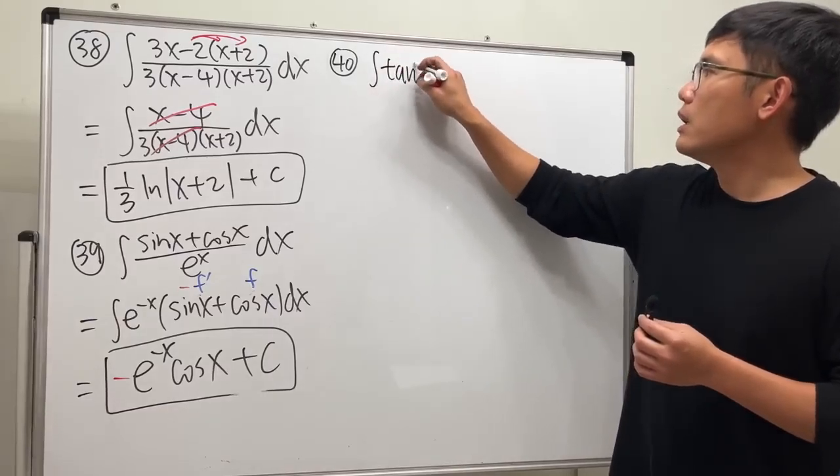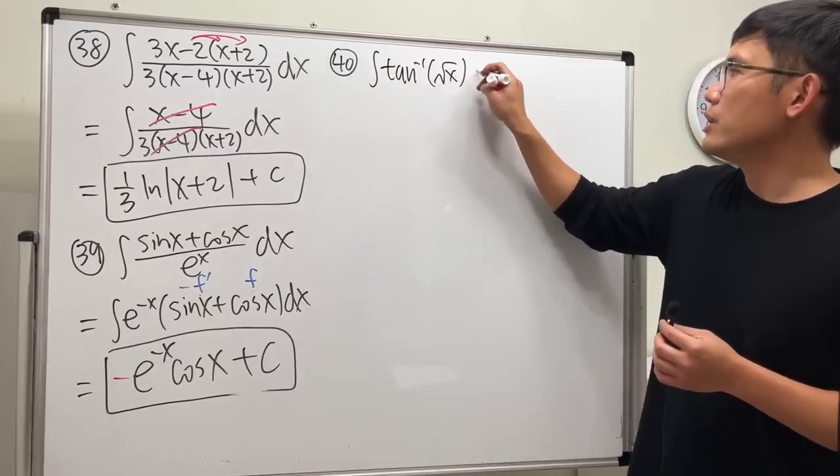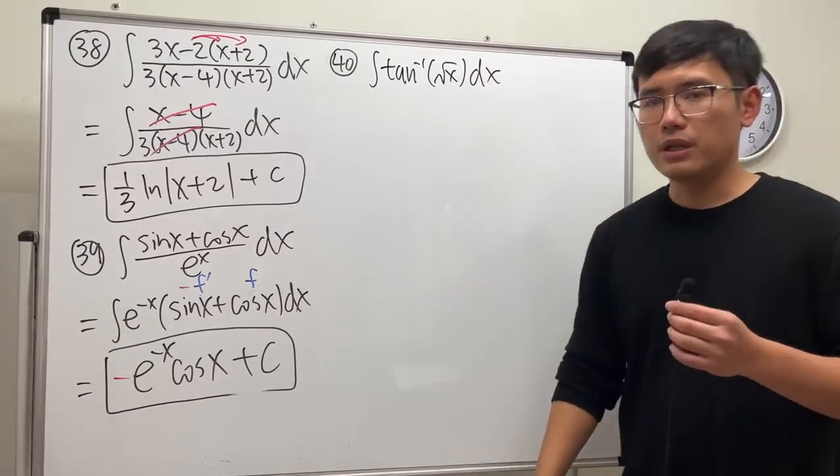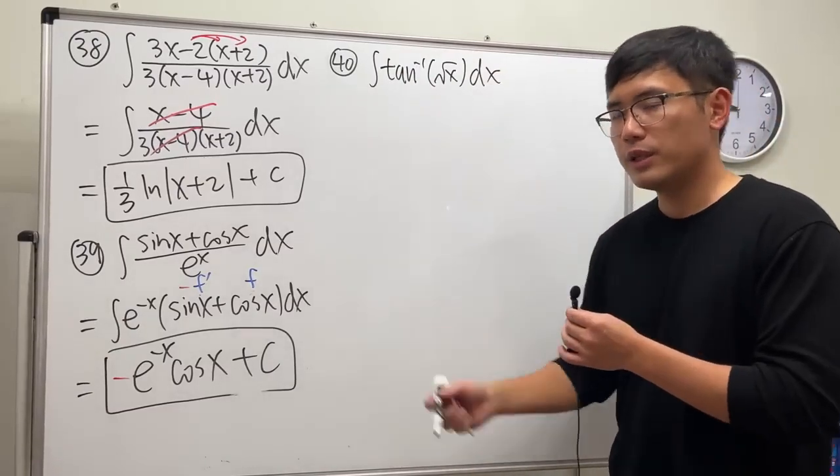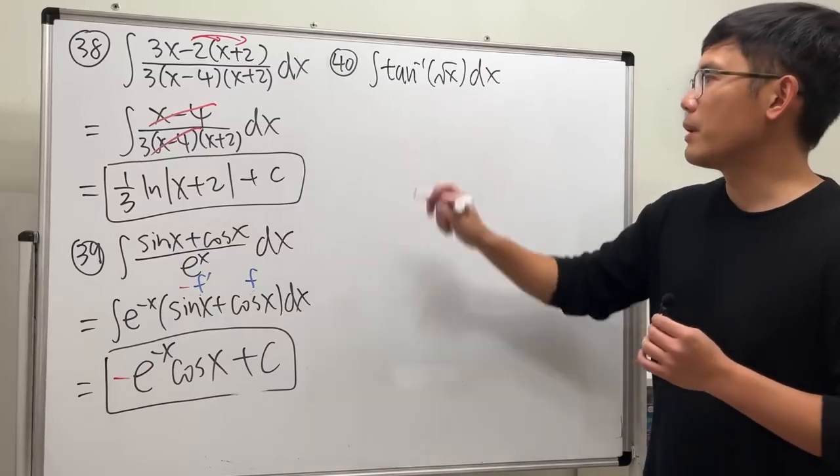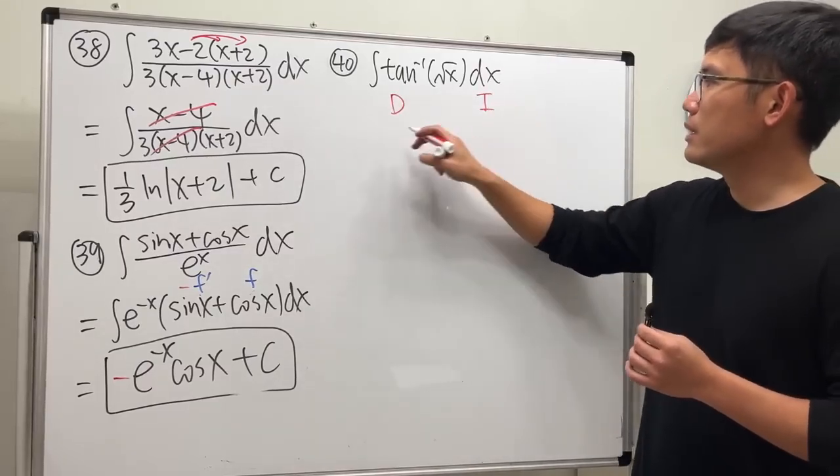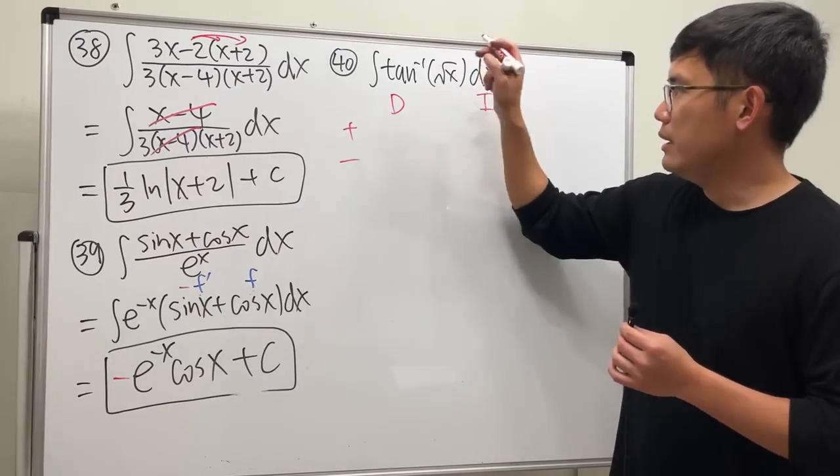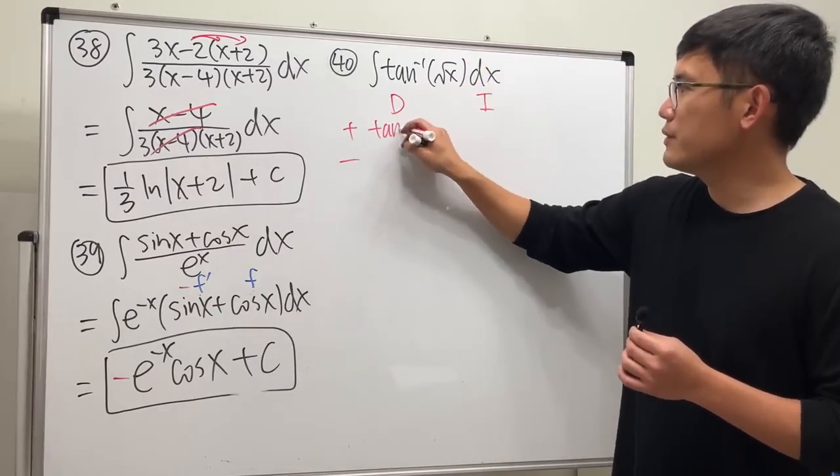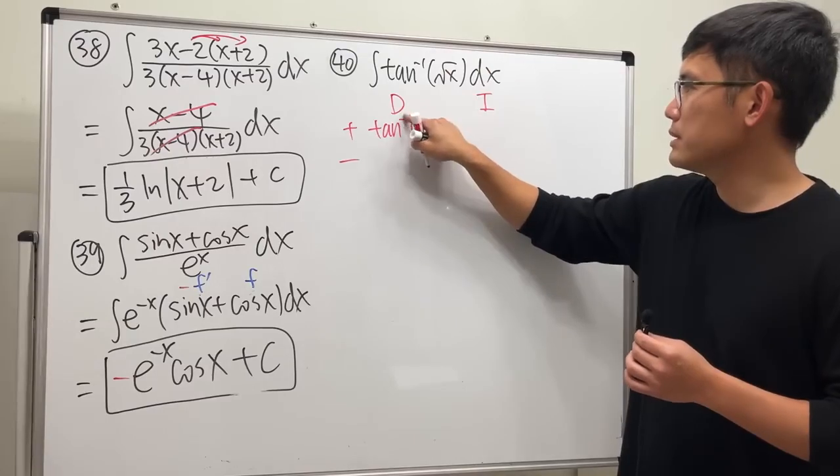Integral of inverse tangent of square root of x. Let's just integrate this right away with integration by parts. I'm just going to differentiate and integrate, differentiate this instead. Instead of looking at this as integration, let's see what happens.